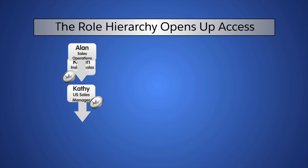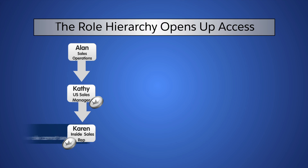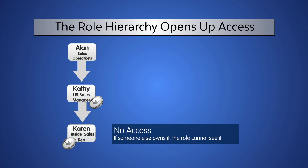Beneath the managers are the inside sales reps. Since opportunities are private, the role hierarchy allows us to open up access in one of three ways. For each role, we could choose: No access — this maintains the org-wide default of private. Users in this role would not be able to see opportunities they do not own. We'll use this for the inside sales rep role.